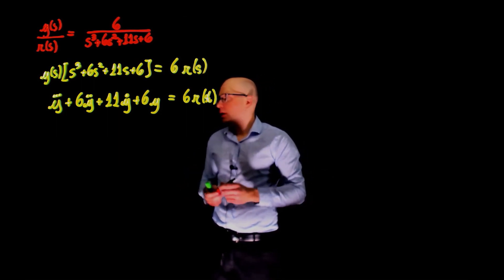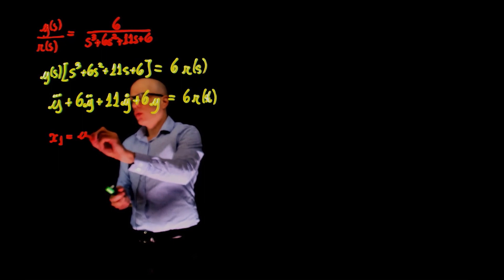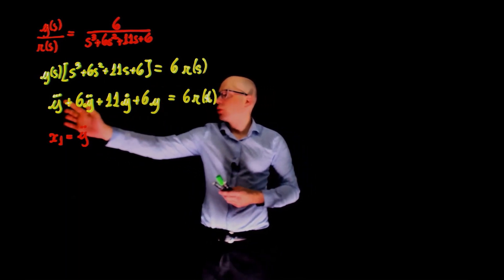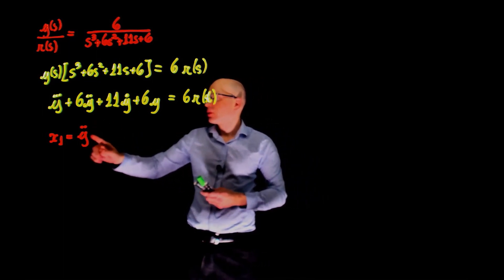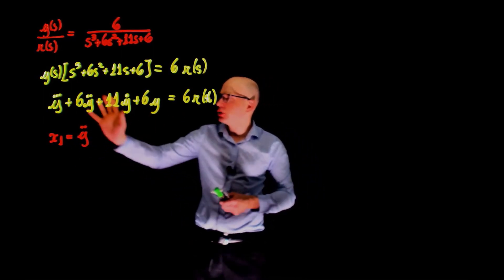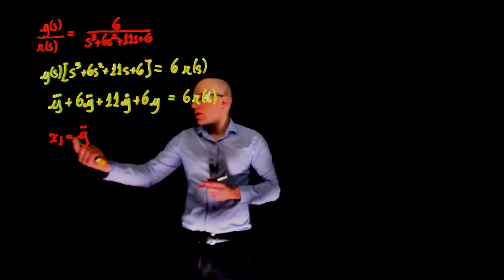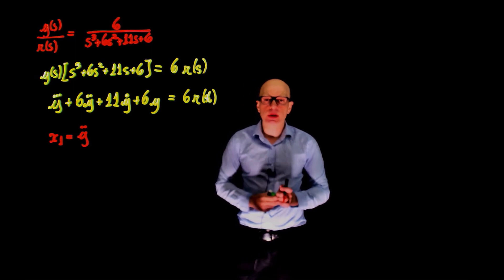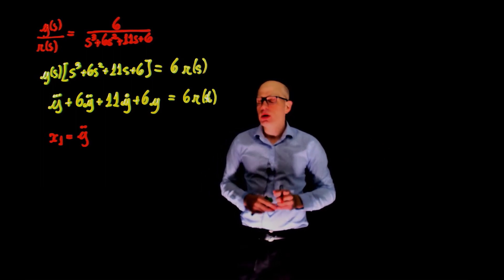The choice I'm going to make is to call x1 = ÿ (y double-dot). I'm taking one derivative lower than the highest derivative, which is y triple-dot. So when we replace x1 back, we get ẋ1, and that's the expression we'll use for ẋ1. There are many choices — we could have called x1 simply y, x2 = ẏ, x3 = ÿ, and so on. That doesn't change the validity; it will change the equations and matrices, but it's also a valid state-space representation.